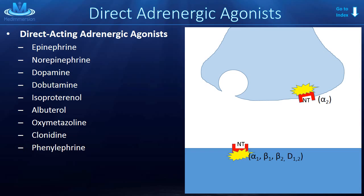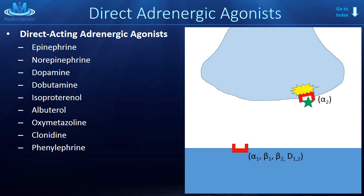The receptors are stimulated by the neurotransmitter. The green star here represents a direct sympathomimetic drug. It works the same way — it directly acts on the adrenergic receptor. That's why it's called a direct adrenergic receptor agonist. On the left side you'll see a short list of drugs — these are examples of direct acting sympathomimetics or adrenergic agonists.